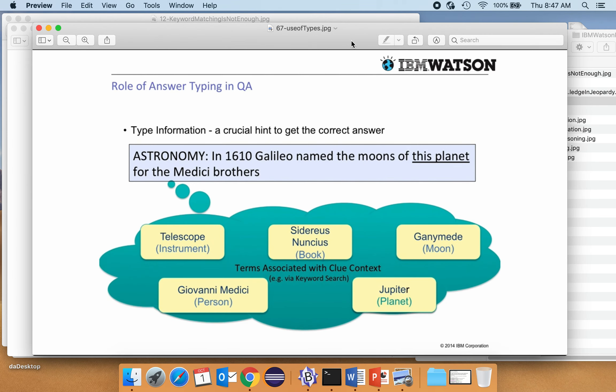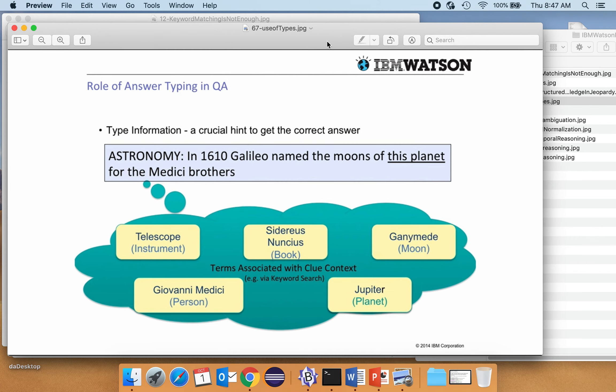So as I mentioned to you before, lexical answer type, LAT, was really crucial. So suppose we have all these answers that we came up with that are potential answers for this clue. In 1610, Galileo named the moons of this planet for the Medici brothers. So what are we talking about? What's a planet, right? Is it an instrument, a book, a moon? So it's very important to realize we're looking for a planet.